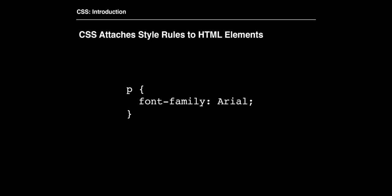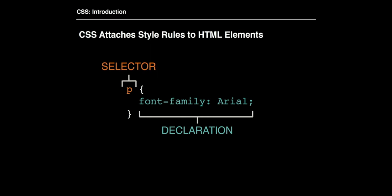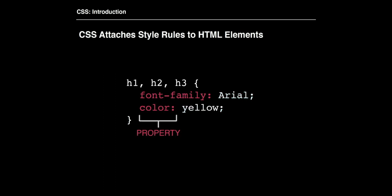CSS is structured by having a selector, which selects the HTML element, tag, class name, or ID name, and then applying a declaration to that selector. In this case, we have a paragraph that we're selecting in our HTML, so any P would now have the font family Arial associated to it. Within the declaration, we have the property — like font family, color, size, width, height — and then we can apply a value to that property, like Arial, yellow, or 100 pixels.